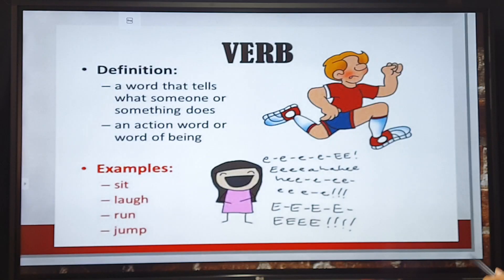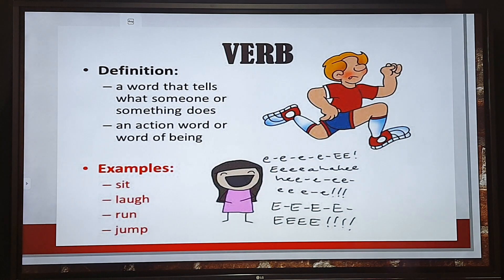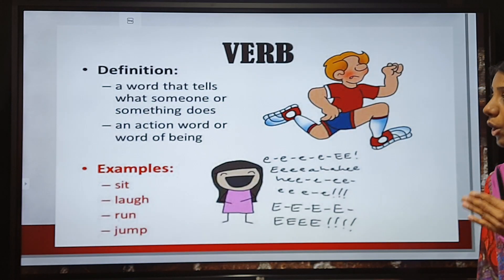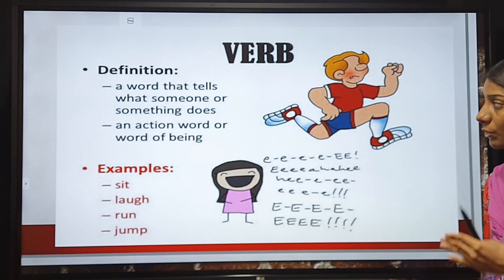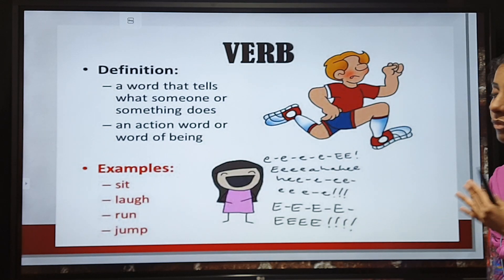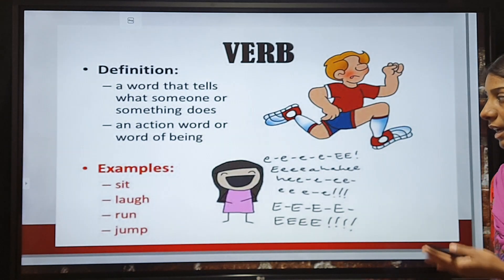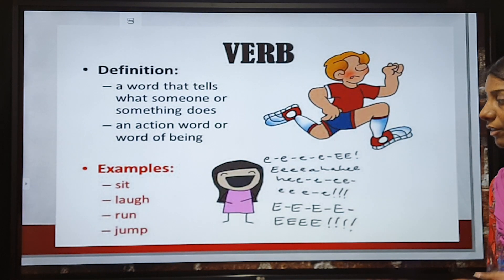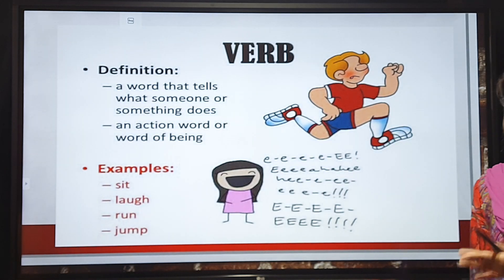Let's move on. Here comes the definition of verbs again: a word that tells what someone or something does — an action word or word of being. Here are some examples: sit, laugh, run, and jump. These are examples of verbs.